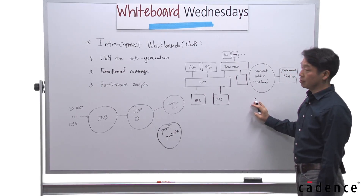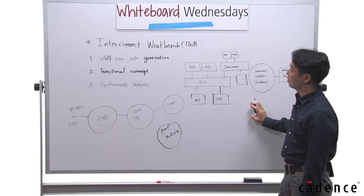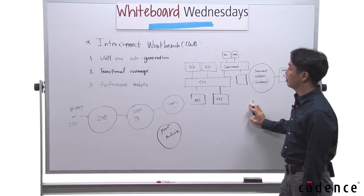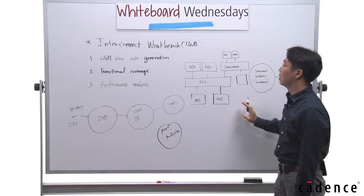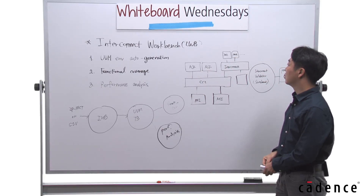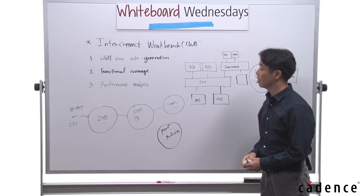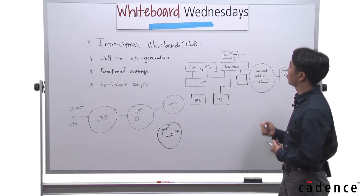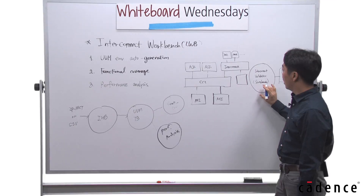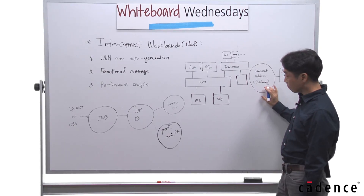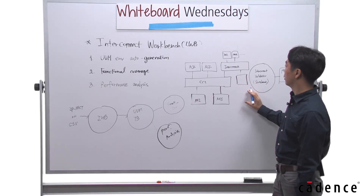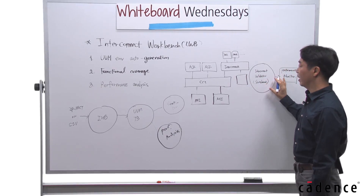If the user doesn't use IWB, they have to replace all the masters and slaves with Cadence VIP. The Interconnected Workbench includes the Interconnected Validator, which is a Cadence scoreboard.